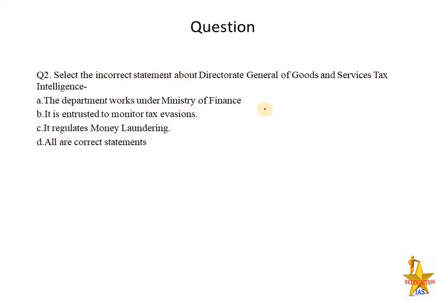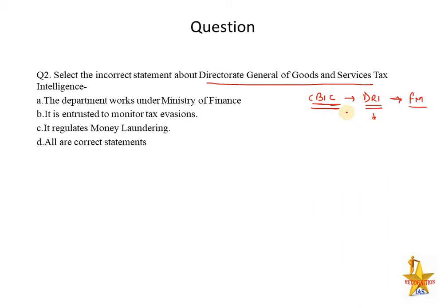The next question is about DGGI — the Director General of Goods and Services Tax Intelligence. This body functions under CBIC, which stands for Central Board for Indirect Tax and Customs. Similarly, DRI — the Department of Revenue Intelligence — works under the Finance Ministry. DRI's work relates to Money Laundering and Tax Evasion-related crimes. Just like DRI, the Director General of GST has been created to monitor GST-related fraud. It regulates money laundering, monitors tax evasion, and works under the Finance Ministry.